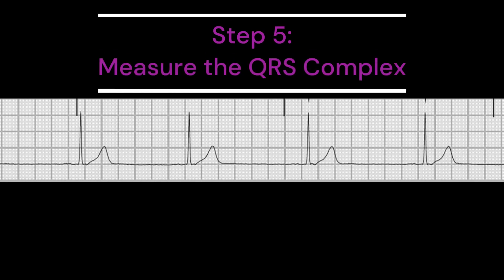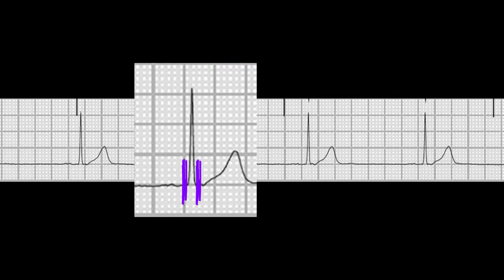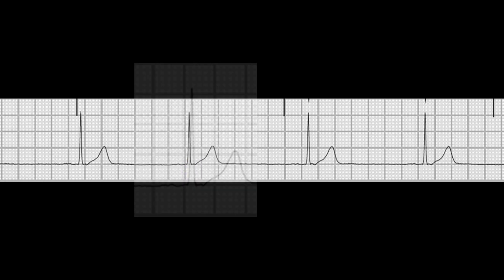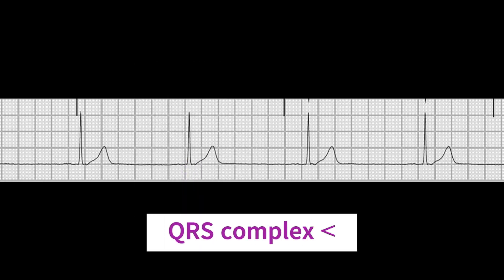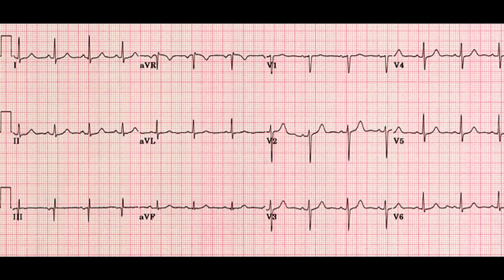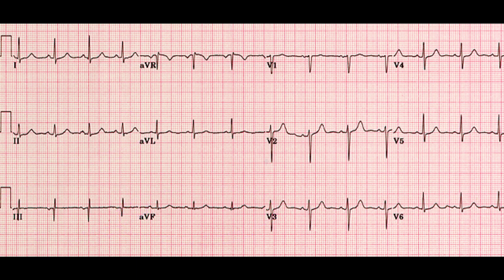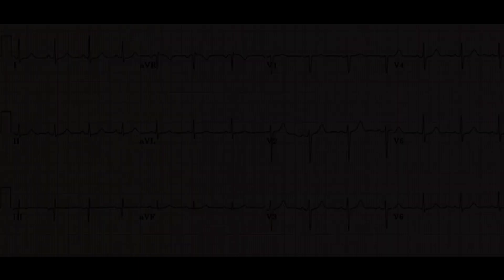Finally, let's take a look at the QRS complex. In a junctional rhythm, the QRS complex will typically appear normal, with a duration of less than 0.12 seconds. The QRS complex will also be upright in leads 2, 3, and AVF, and inverted in leads AVR and V1.